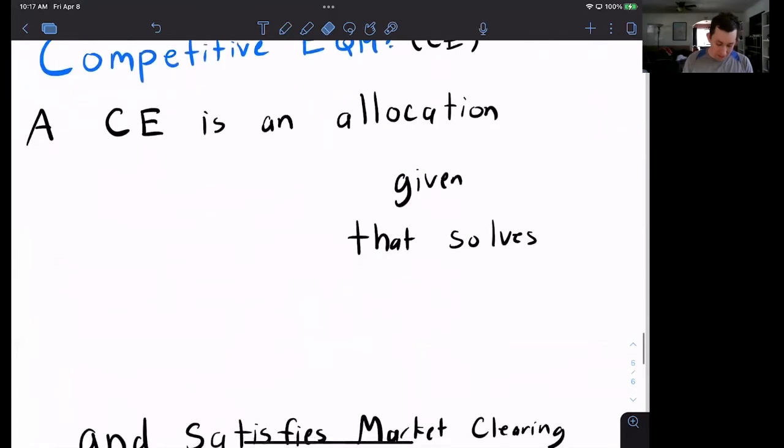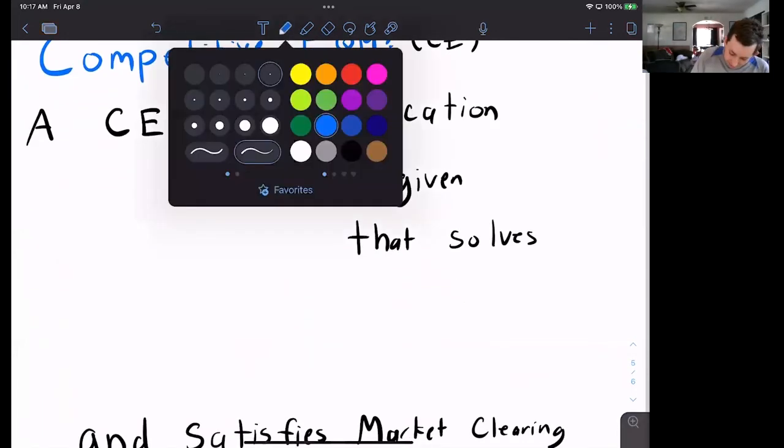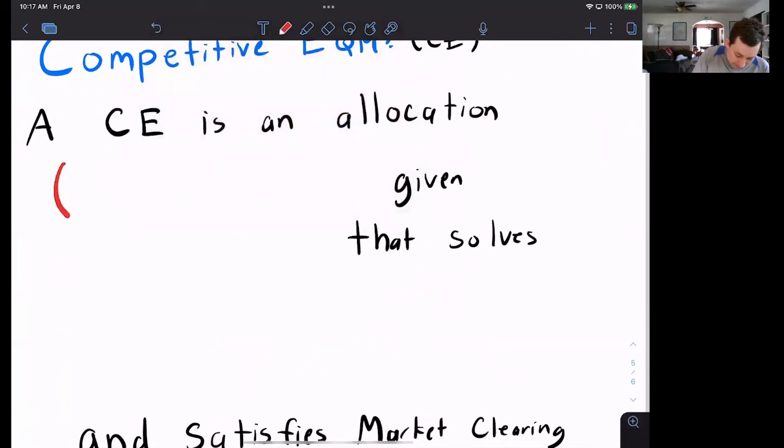A competitive equilibrium is an allocation. What is that allocation? It's the bunch of stuff that they get. So X1 is the amount of X person one gets, Y1 is the amount of Y that person one gets. And also we have X and Y going to person two, so X2 and Y2. Here's the allocation.